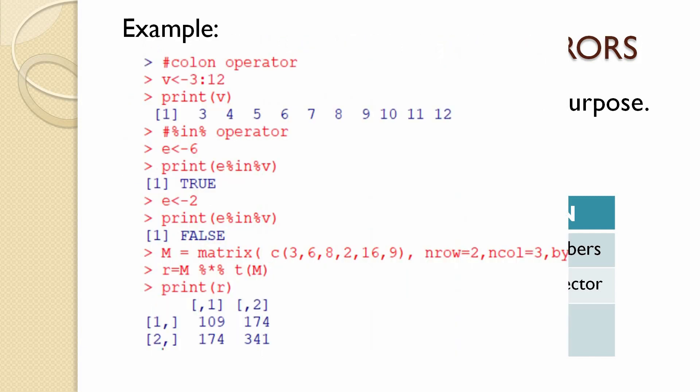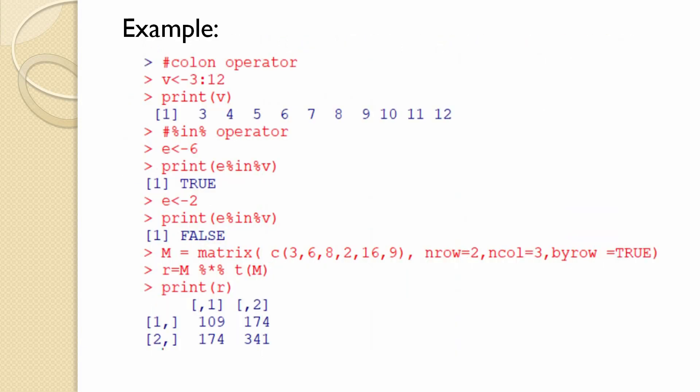For an example of the colon operator, we take variable V which is assigned 3:12. This means V takes values starting from 3 and ending at 12. If we print V, we get 3, 4, 5, 6, 7, 8, 9, 10, 11, and 12. This is the use of the colon operator.